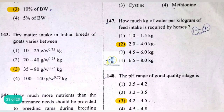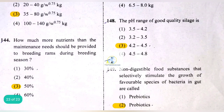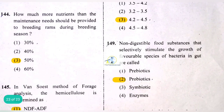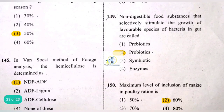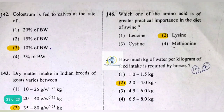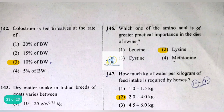Dry matter intake in Indian breeds of cattle varies between 35 to 80 grams per kg of metabolic weight. During the breeding season, 50% more nutrients than maintenance needs should be provided to breeding rams. In the Van Soest method of forage analysis, hemicellulose is determined.